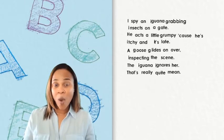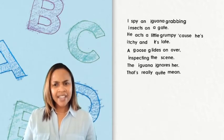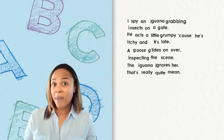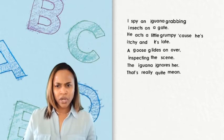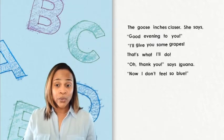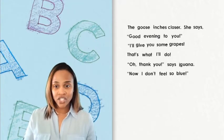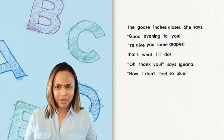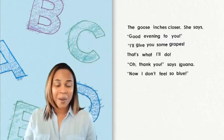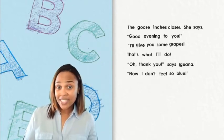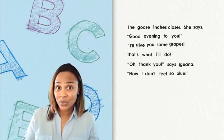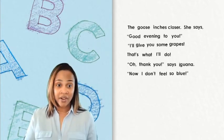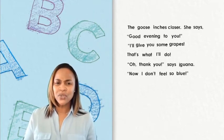I spy an iguana grabbing insects on a gate. He acts a little grumpy cause he's itchy and it's late. A goose glides on over, inspecting the scene. The iguana ignores her. That's really quite mean. The goose inches closer. She says, good evening to you. I'll give you some grapes. That's what I'll do. Oh, thank you, says Iguana. Now I don't feel so blue. Did you notice any words in our poem that had two letters in it? I noticed them too — I noticed the words in and on. They have two letters in them.